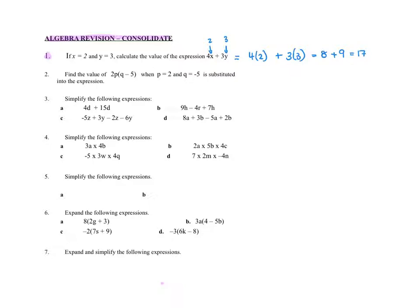With number 2, find the value of 2p enclosed with brackets q minus 5. So just every time we see p equals 2, we'll put a 2. And every time we see q, we'll put a negative 5. So we'll pop that in. So we'll have 2 times 2. Then we've got the bracket and we've got negative 5 minus 5.